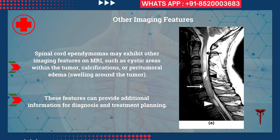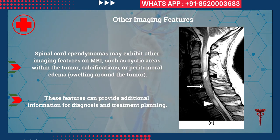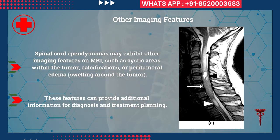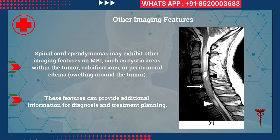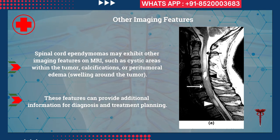Other imaging features on MRI help differentiate ependymomas from other spinal cord tumors. These include cystic areas within the tumor, sometimes calcifications, and peritumoral edema. You can see this entire area is peritumoral edema - the edema and tumor together cause swelling of the spinal cord. These features provide additional information for diagnosis and, most importantly, for planning of surgery.